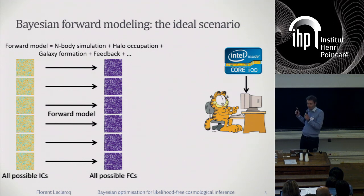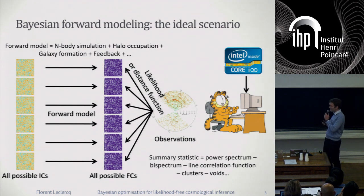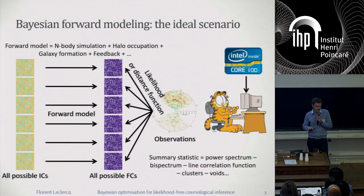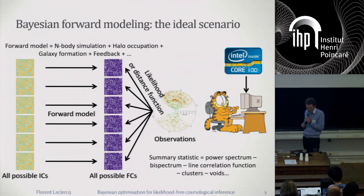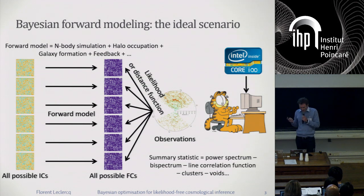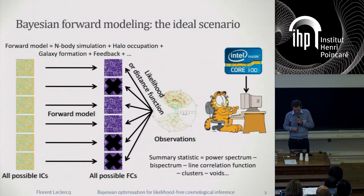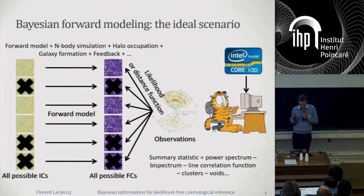We end up with a set of possible final conditions for the universe, and we compare them with the observations through the full likelihood. The full likelihood in this case lives at the level of the entire map — a very high-dimensional likelihood. Or we can be slightly more modest and restrict ourselves to summary statistics, which in the simplest case is the power spectrum, but we can also look at higher-order correlations in Fourier or real space, or specific elements like clusters or voids. This comparison means we discard final conditions not compatible with the observations, and in turn discard the corresponding initial conditions. That's the ideal scenario.